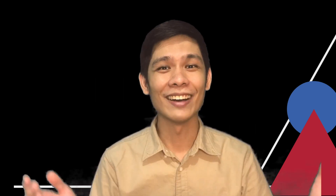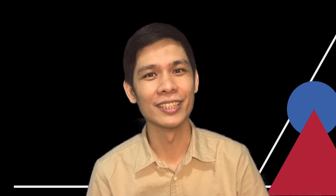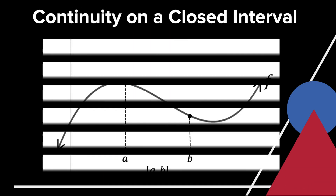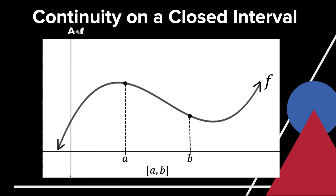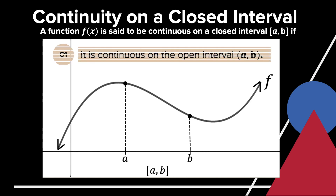Now let us have our main discussion. What is continuity on a closed interval? A function f(x) is said to be continuous on a closed interval [a, b] if: first condition, it is continuous on the open interval (a, b).